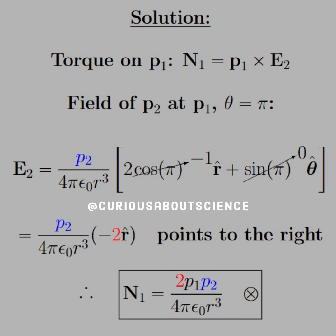All right, so if we want the torque on P1, N1 has to equal P1 times E2, where E2 is the field produced by dipole 2 since E2 would be the external field to P1.